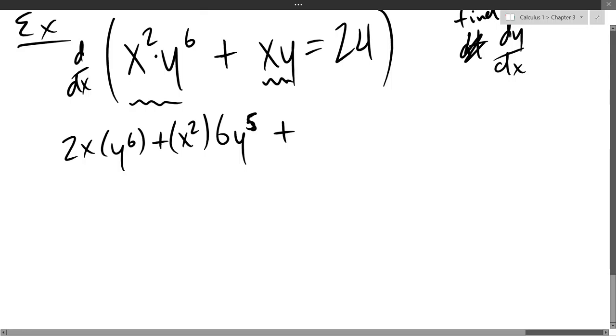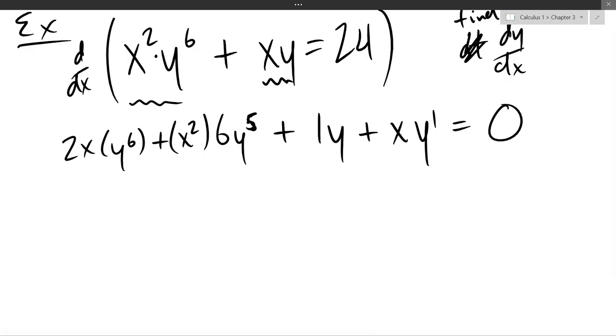Now I still have a second product rule on the second term. So derivative of x is 1, so I get 1y plus x. Derivative of y is not 1, I can write it as y prime or dy/dx. Oh, I've already messed up somewhere. Where should that extra y prime go? Next to what term? 6y to the 5th needs an extra y prime.